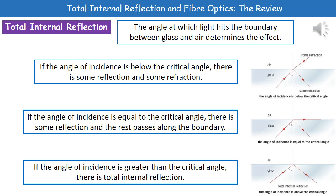In the middle diagram, the angle of incidence is equal to the critical angle. We still have some reflection occurring, and the rest of that wave is then directed along that boundary.